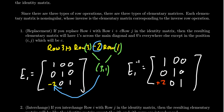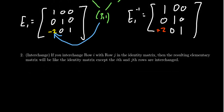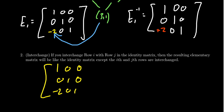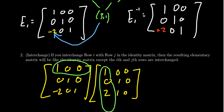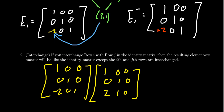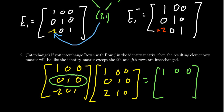Let's verify this quickly. If we take the matrix [1,0,0 / 0,1,0 / -2,0,1] and multiply it by its proposed inverse [1,0,0 / 0,1,0 / 2,0,1]: taking the first row times the first column gives 1; the second column gives 0; the third column gives 0. For the second row, you grab 0, 1, 0. The first two rows just copy down as identity rows.